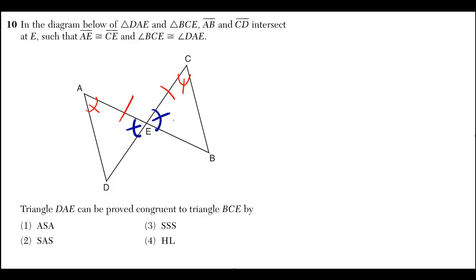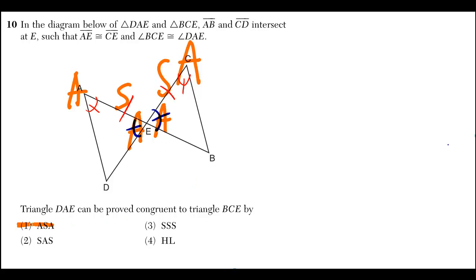Those two angles are equal because they are vertical angles, and there's a theorem that says vertical angles are always equal. Angle side angle corresponds to angle side angle, therefore our answer is angle side angle.